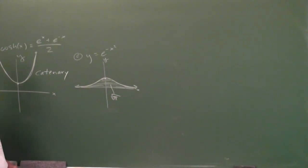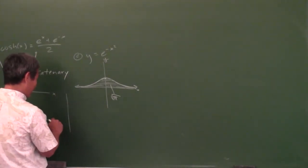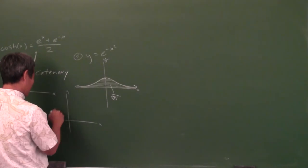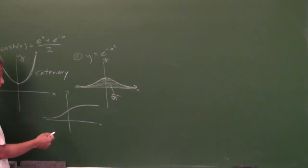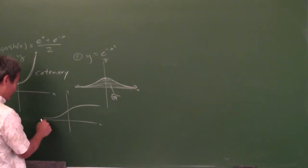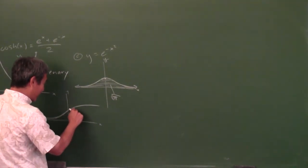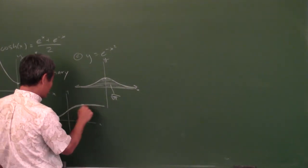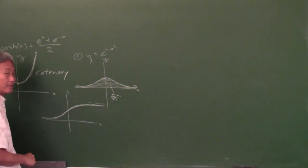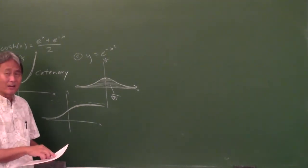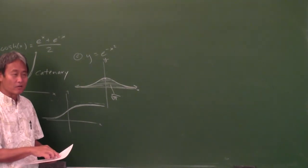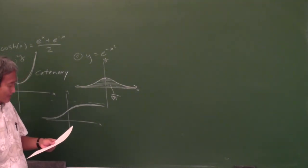Tell me what it looks like. Anybody here going to take biology? The graph looks something like this, because in real life, this is how populations grow. They start, then they start growing quickly, but then because of limited resources, it starts leveling off. In fact, wasn't this in your algebra 2 book — the logistic growth thing?